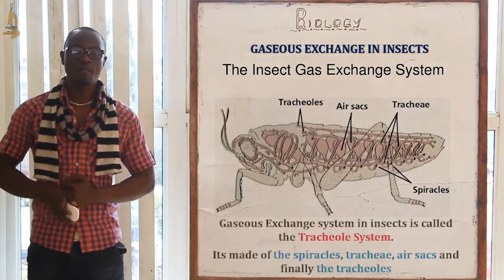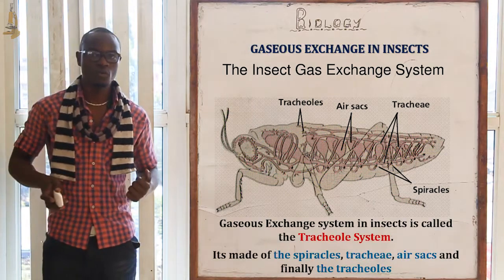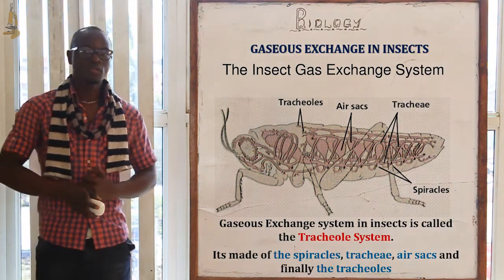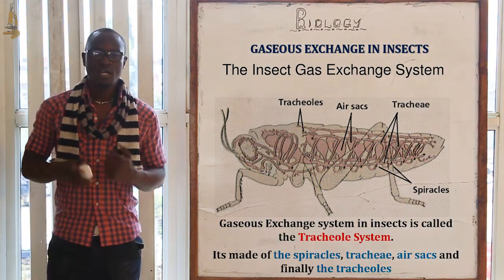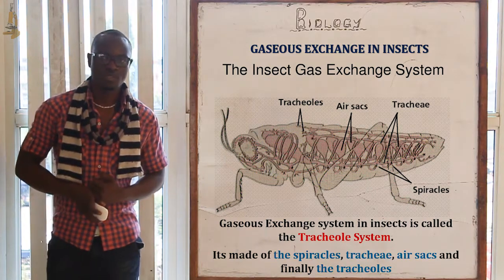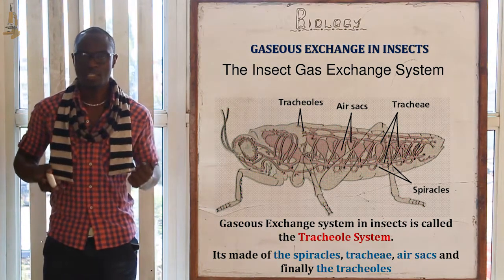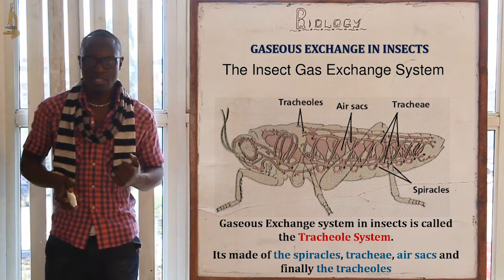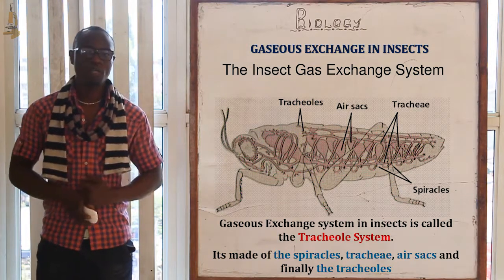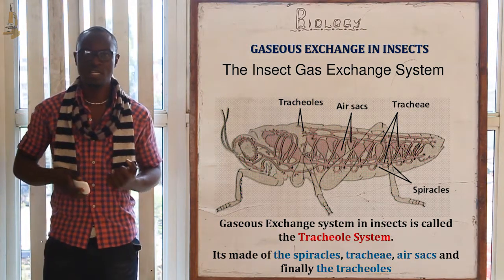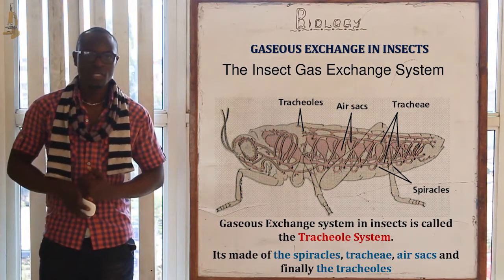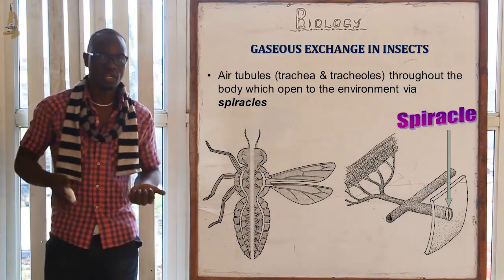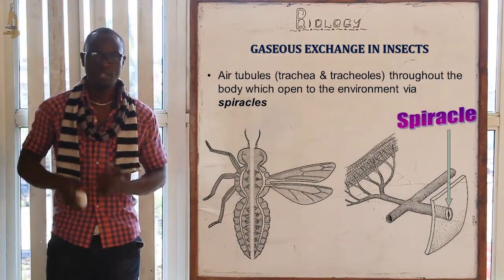Now let's look at gas exchange in insects. The insect has a large network of air tubes called the tracheal system, which penetrates all body parts to improve gas exchange efficiency. It mainly consists of the spiracles, the trachea, and the tracheoles.